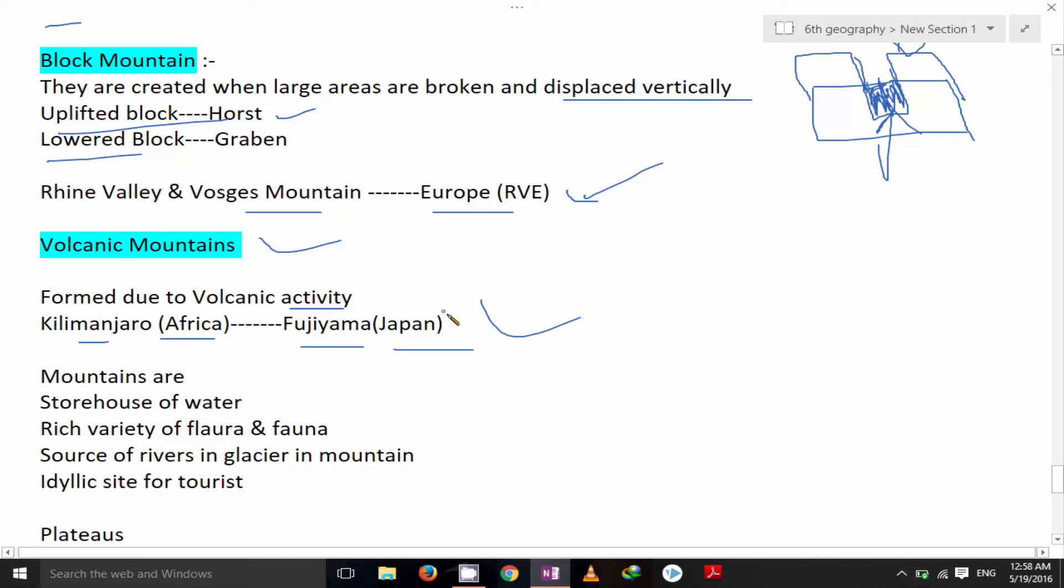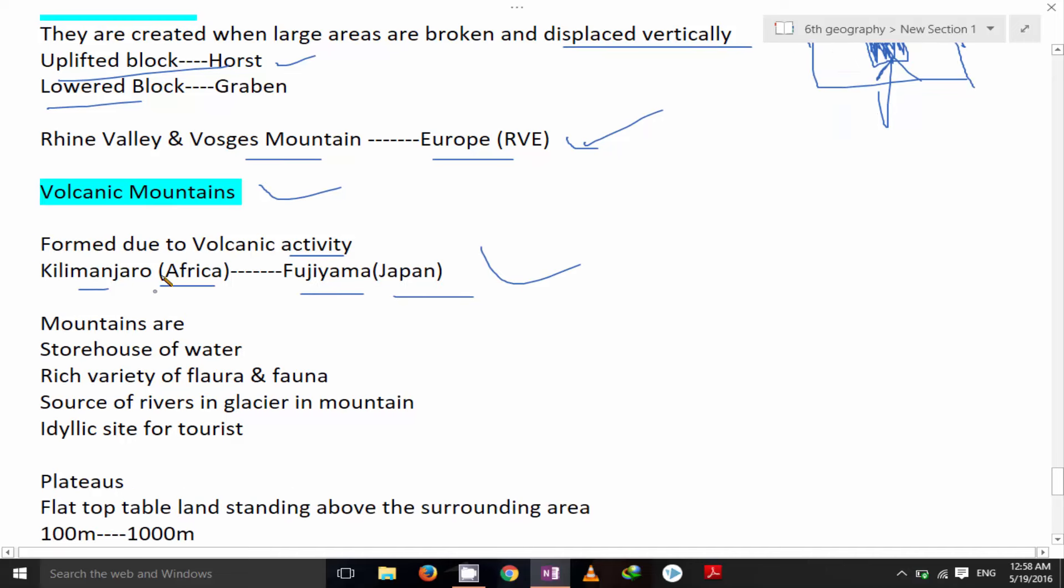Mountains are storehouse of water. Sometimes rich with the variety of flora and fauna. Source of rivers in glacier in mountain. The next idyllic site for the tourist. So mountains are very important, very crucial for us.